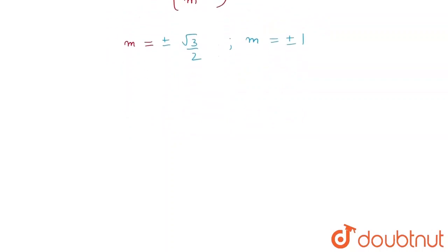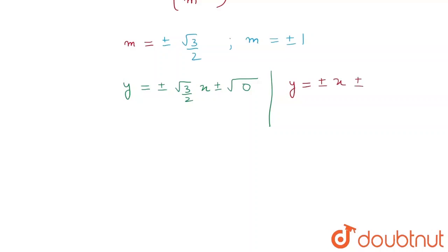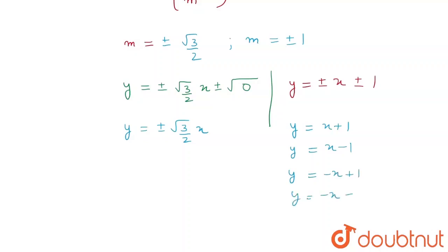Substituting m = ±√3/2 into the tangent equation gives y = ±(√3/2)x, with the constant term being 0. Substituting m = ±1 gives y = x + 1 and y = −x − 1. Therefore the equations of the tangent to this hyperbola which make equal intercepts to the coordinate axes are: y = ±(√3/2)x, y = x + 1, and y = −x − 1.